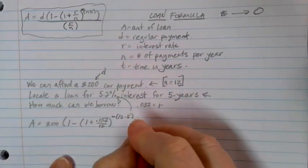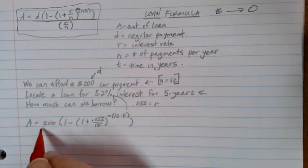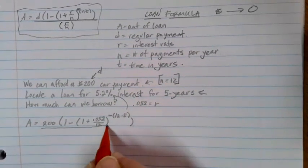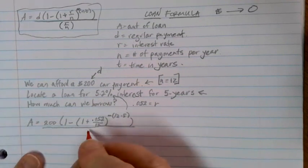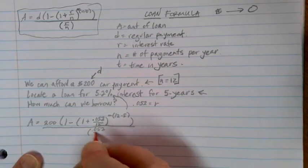At the end of this we need to close off all of our parentheses up here so that we can seal the deal with those parentheses. Then all of this is divided by that R over N value again, so 0.052 over 12.